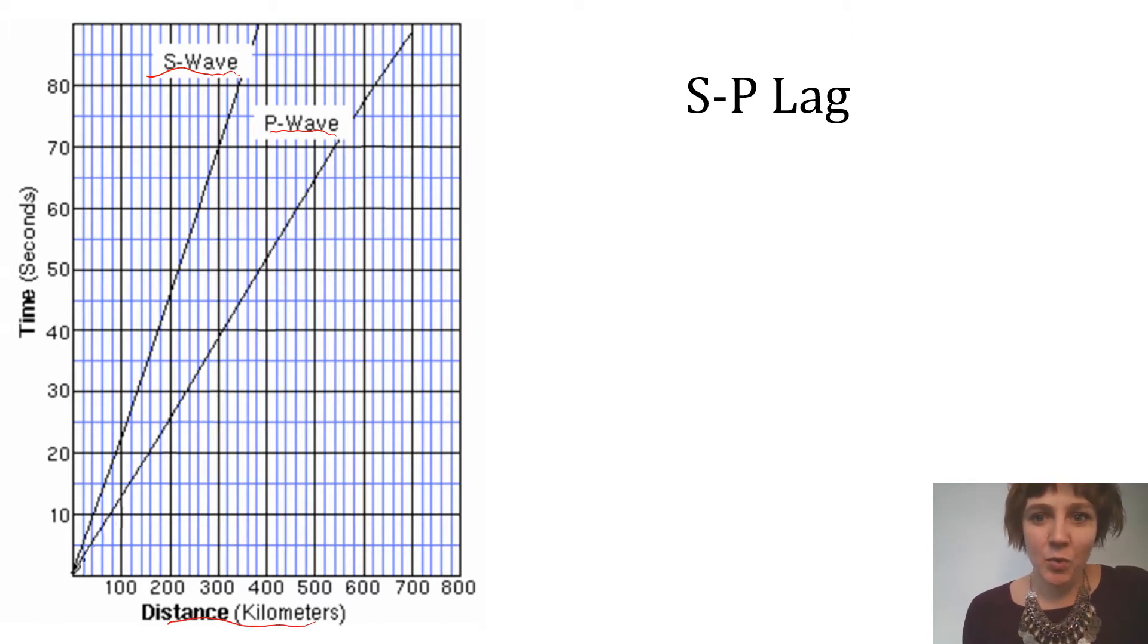Traditionally, once the S minus P time is determined from seismograms, one can then go find out where on the graph the difference in arrival times matches that number. So this part of the graph here represents the difference in the arrival times of the P wave and the S wave.